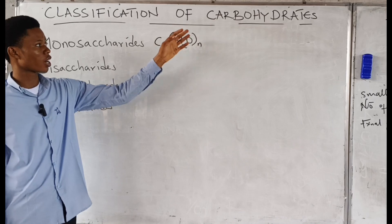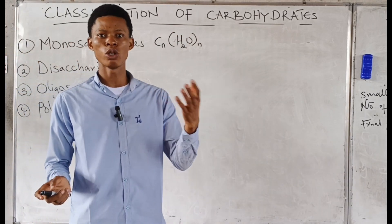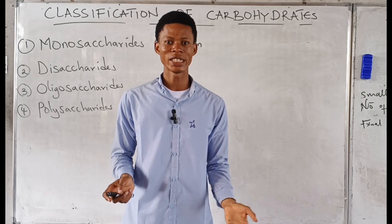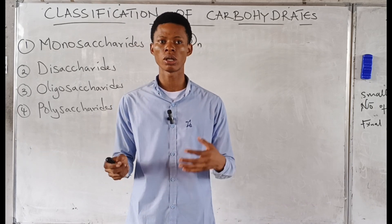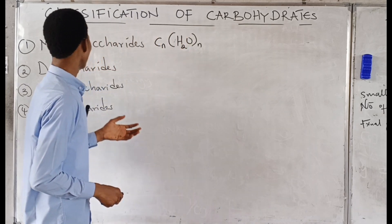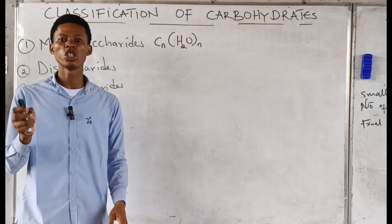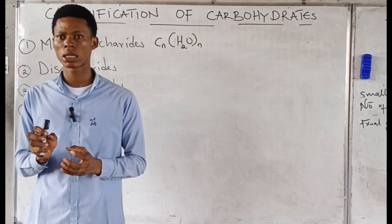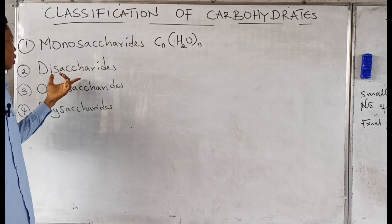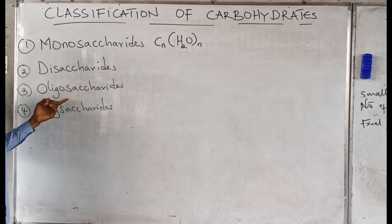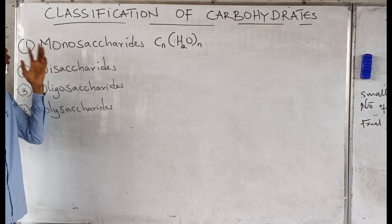Let's look at the classification of carbohydrates. We've seen that carbohydrates are polyhydroxy aldehydes or polyhydroxy ketones, or substances that yield such on hydrolysis. We can classify carbohydrates based on the number of sugar units into monosaccharides, disaccharides, oligosaccharides, and polysaccharides.